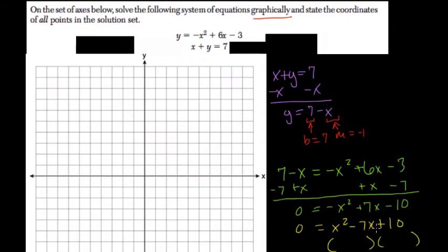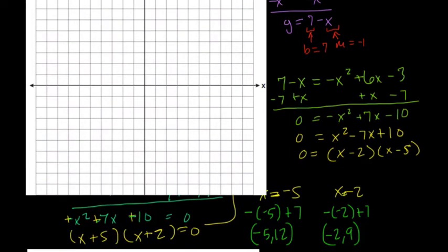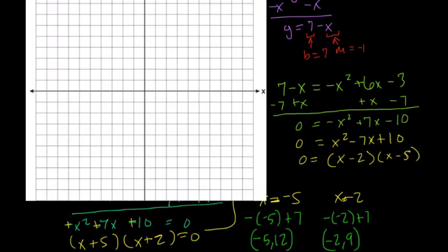Because the factors of 10 could be minus 2 and minus 5. Multiply those two we get positive 10. But if we add them we get negative 7. What does this mean? This means the two functions meet at these two points. So here we can just find the points by finishing this.